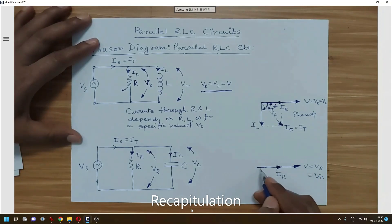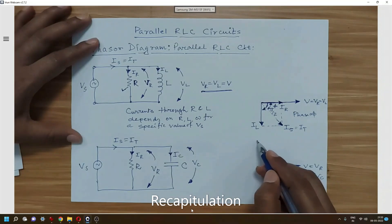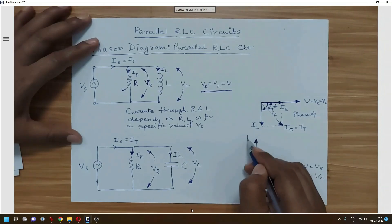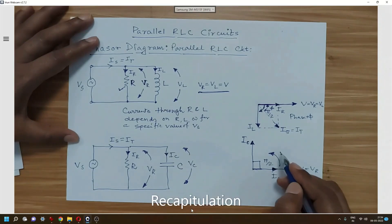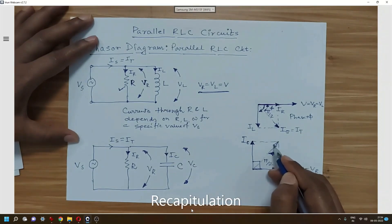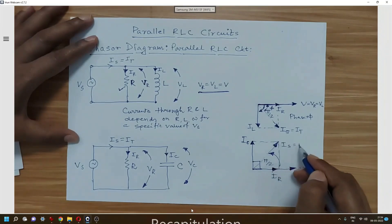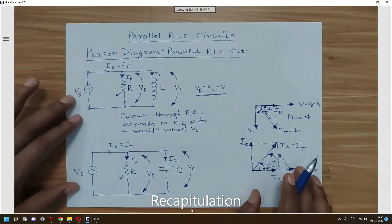For the capacitor, since the current leads, the IC will be considered the leading current. For the resultant current, we denote this phasor as IS or IT. The phasor diagram for the two-element parallel circuit should now be clear.